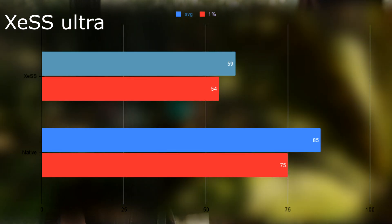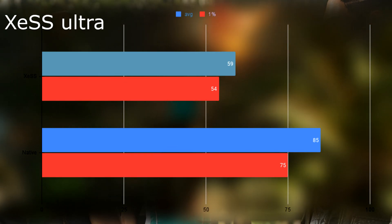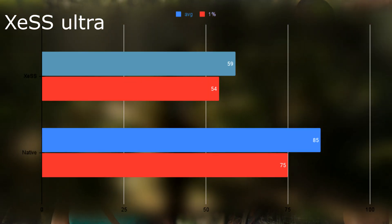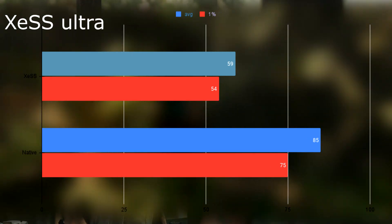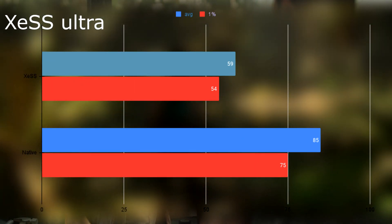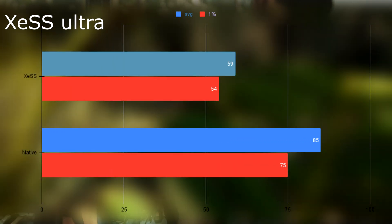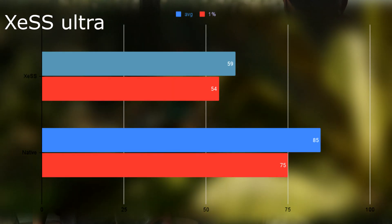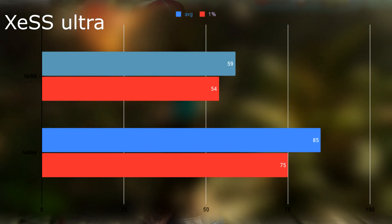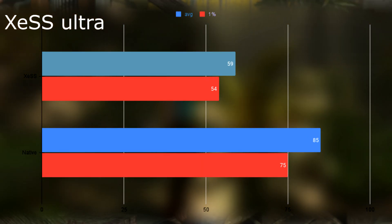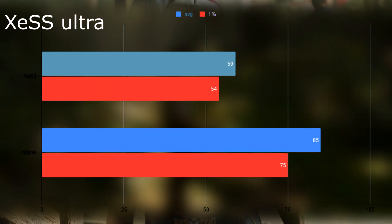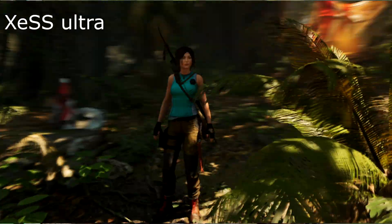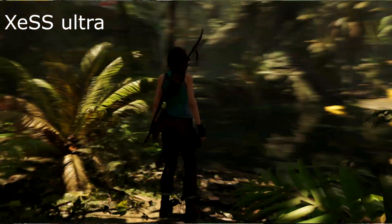Looking at the performance, the Vega 56, which does not support DP4A, sees its frame rate almost halved when running XeSS Ultra at 1080p. Natively at max settings, the game runs at an average of 86 fps with a 1% low of 75. Using XeSS, however, the average drops to 59 fps with a 1% low of 45.